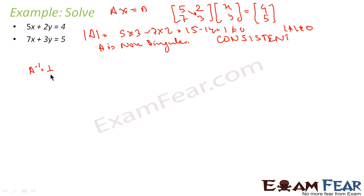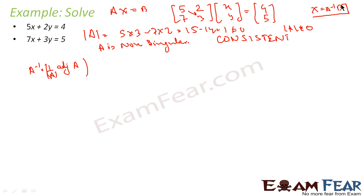The solution is X = A inverse B. A inverse is nothing but 1 by determinant of A into adjoint of A. We know the solution is X = A inverse B, so we are trying to find A inverse, which is 1 by determinant of A into adjoint of A. For that, we first have to find the adjoint of A.